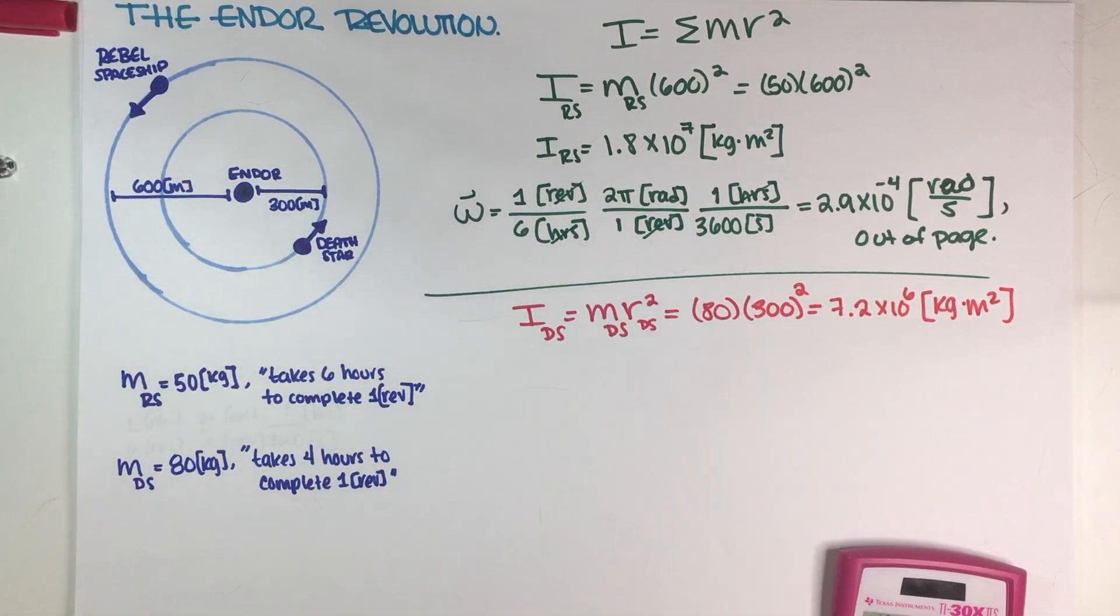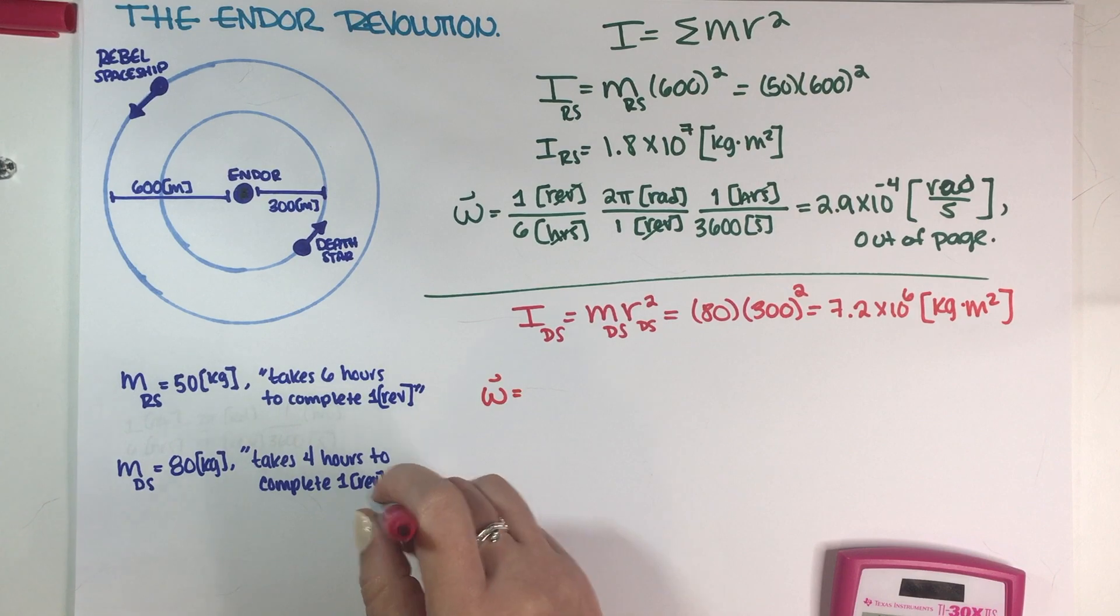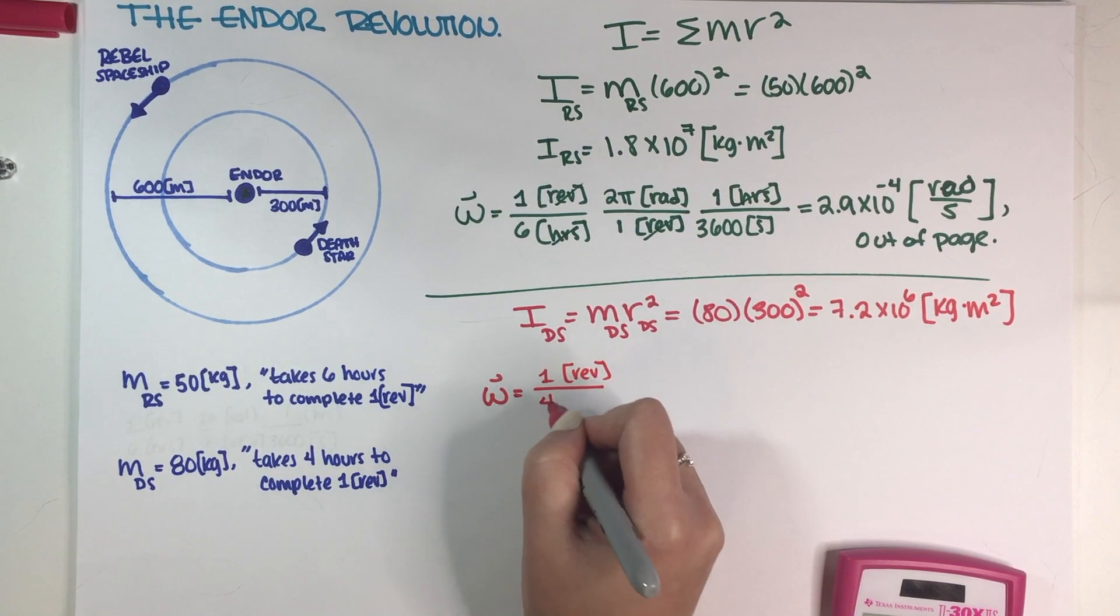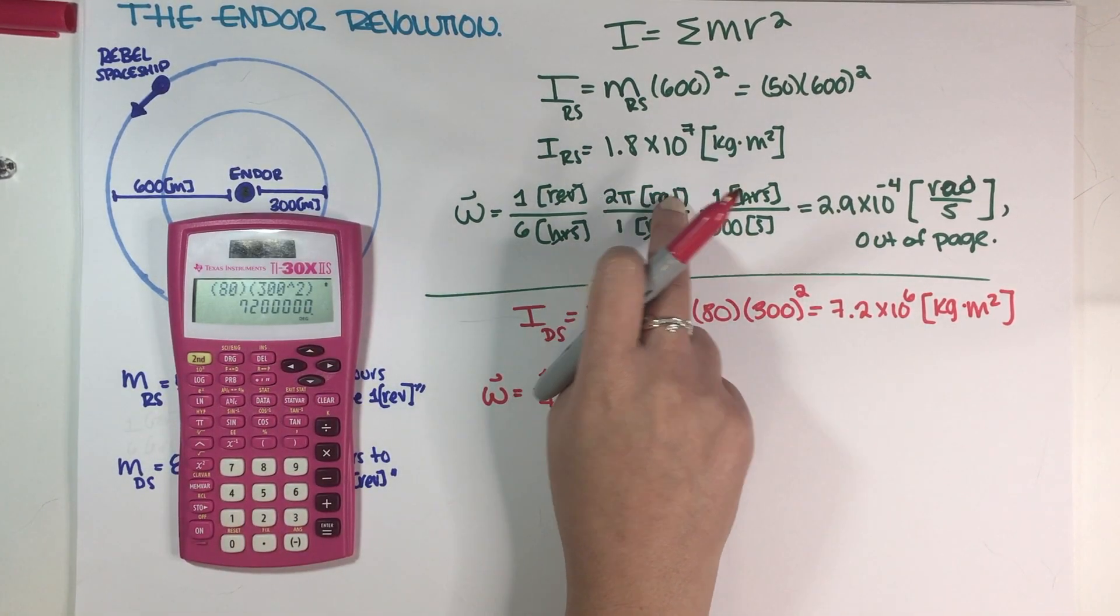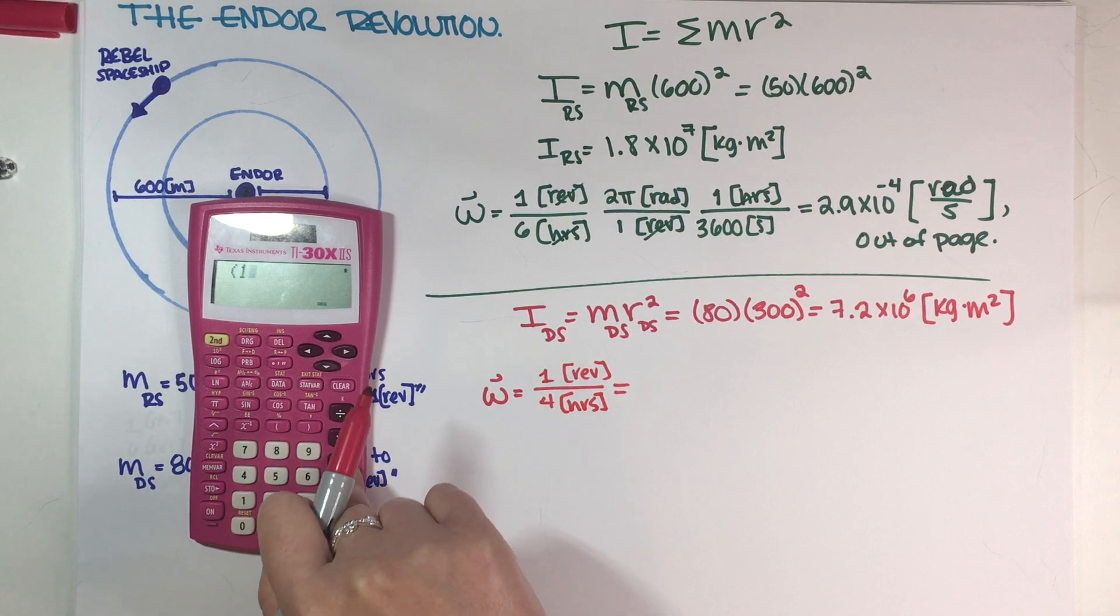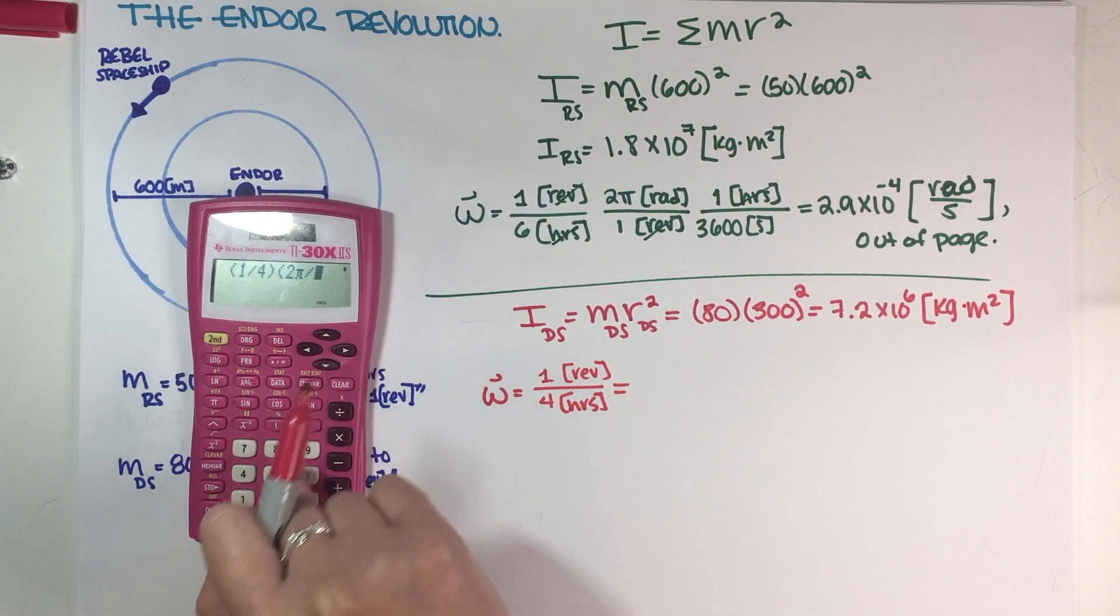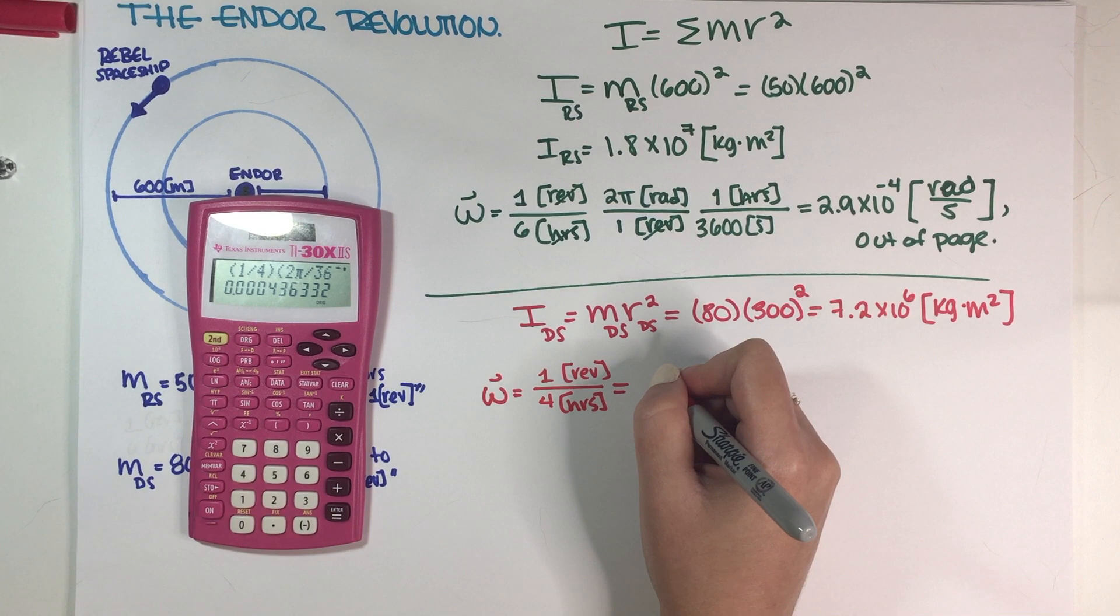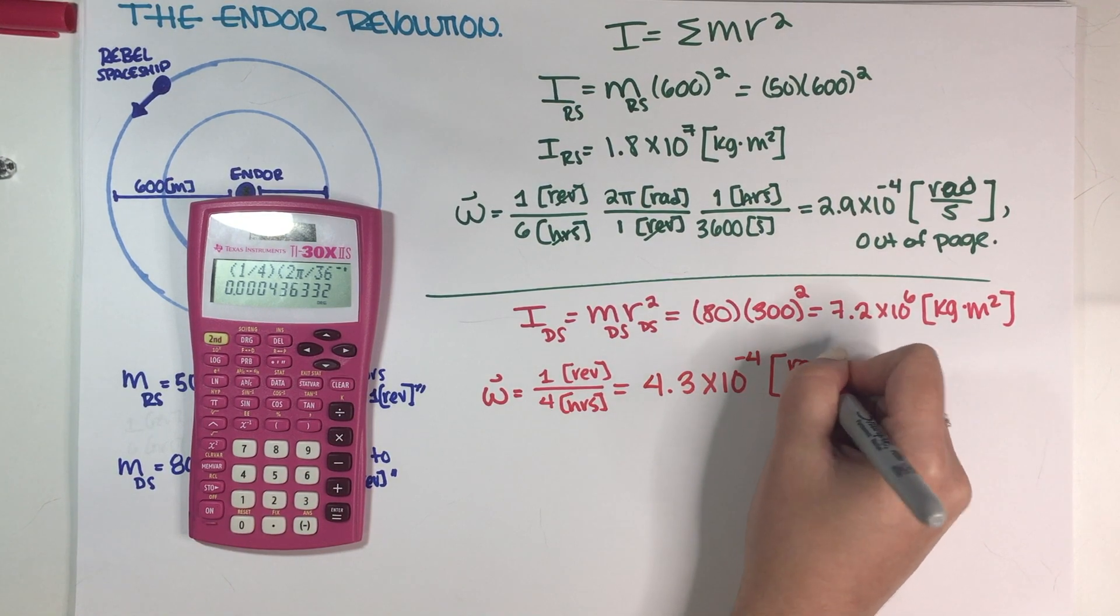In order to figure out the angular velocity, we have to do the exact same conversion of units because they are telling us it takes 4 hours to complete 1 revolution. So that would be 1 revolution every 4 hours. I'm going to do the same conversion, multiply by 2π in the numerator and then times 3600 in the denominator. That would be 1 fourth times 2π over 3600. My final answer is 4.3 times 10 to the negative 4 radians per second.